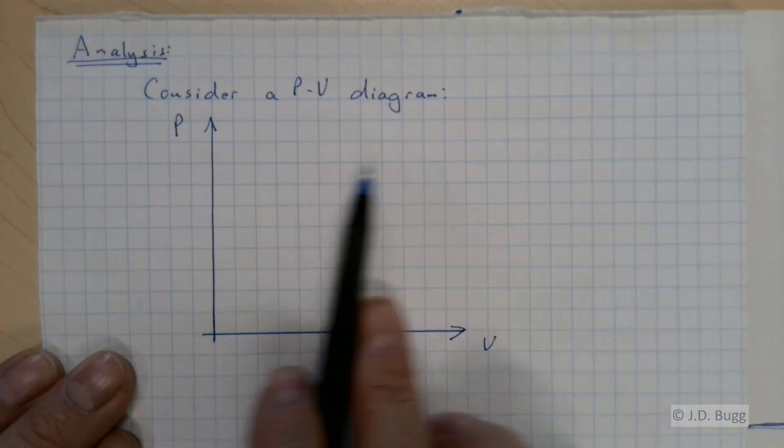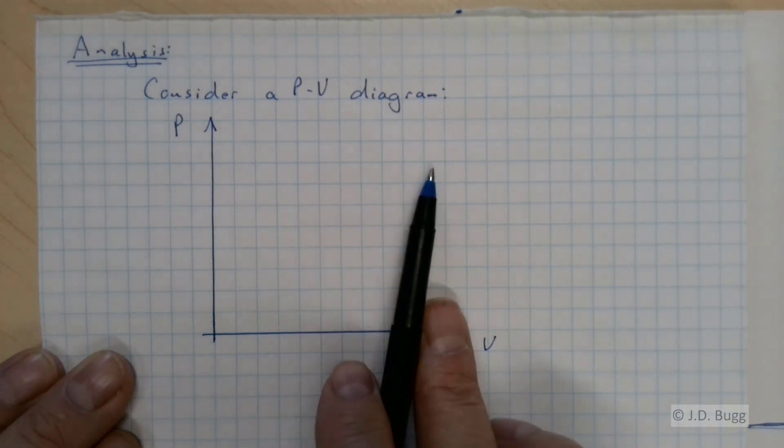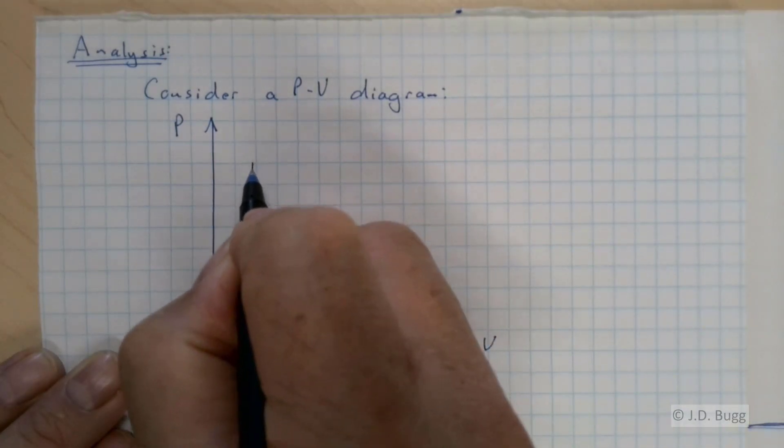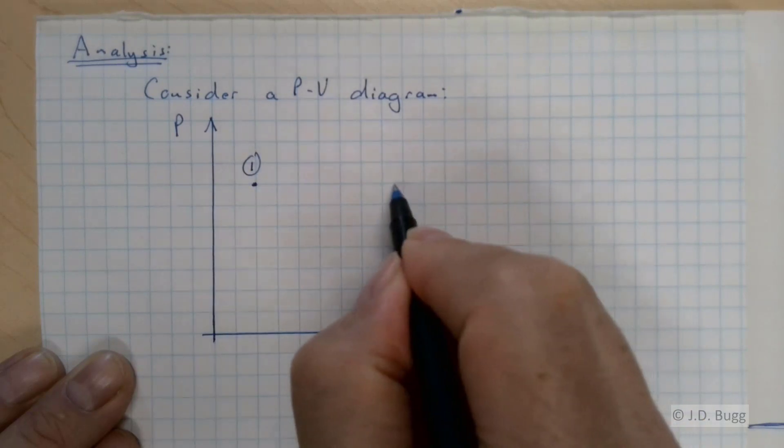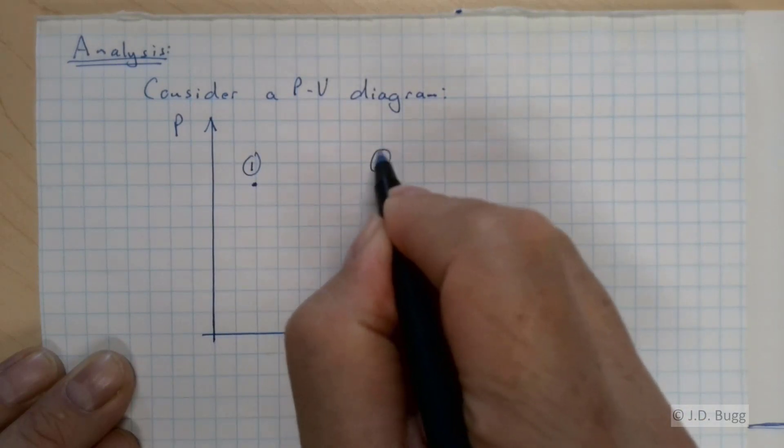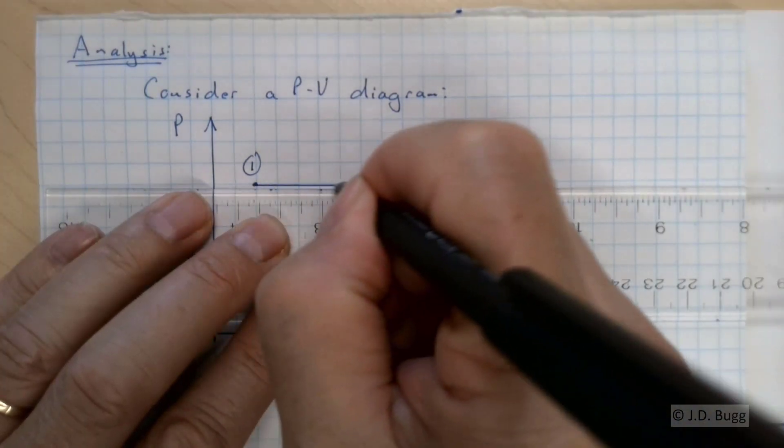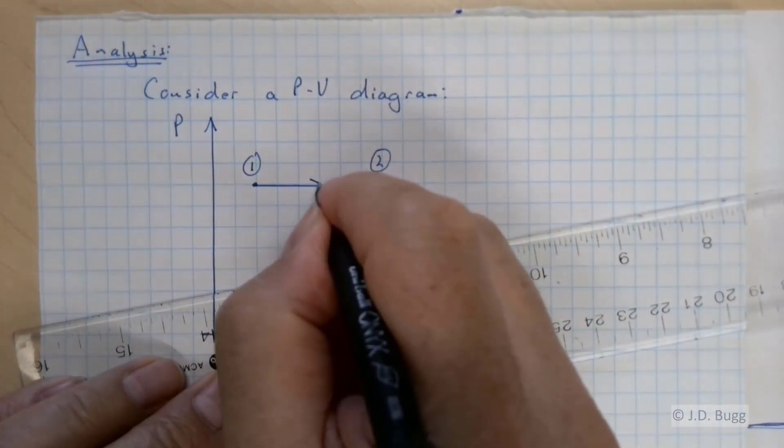So our first process, remember, is isobaric. So it's a constant pressure process. We'll show our first process here going from state point 1 across constant pressure to state point 2. So like that.